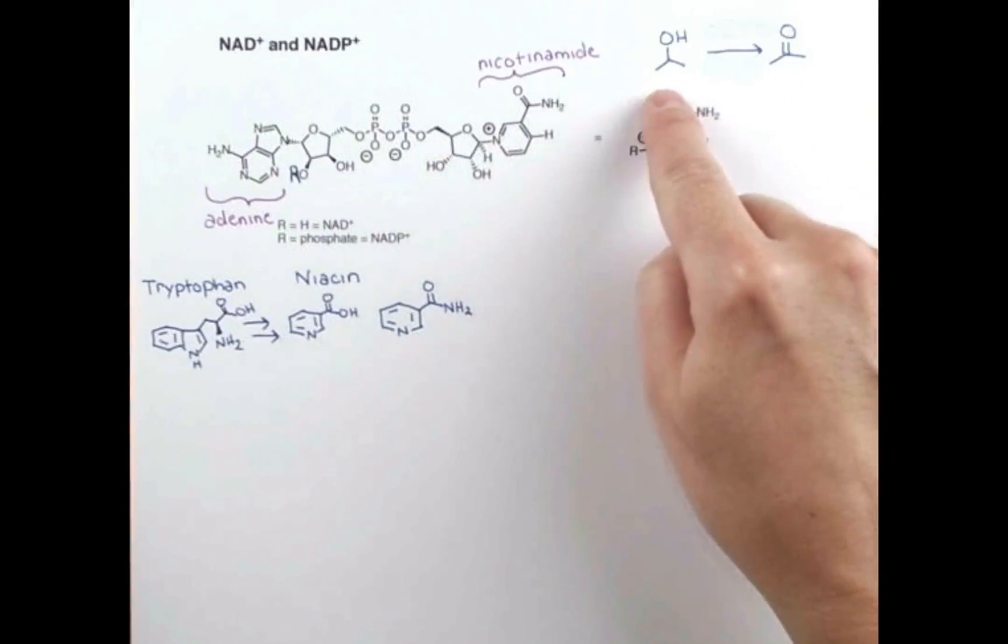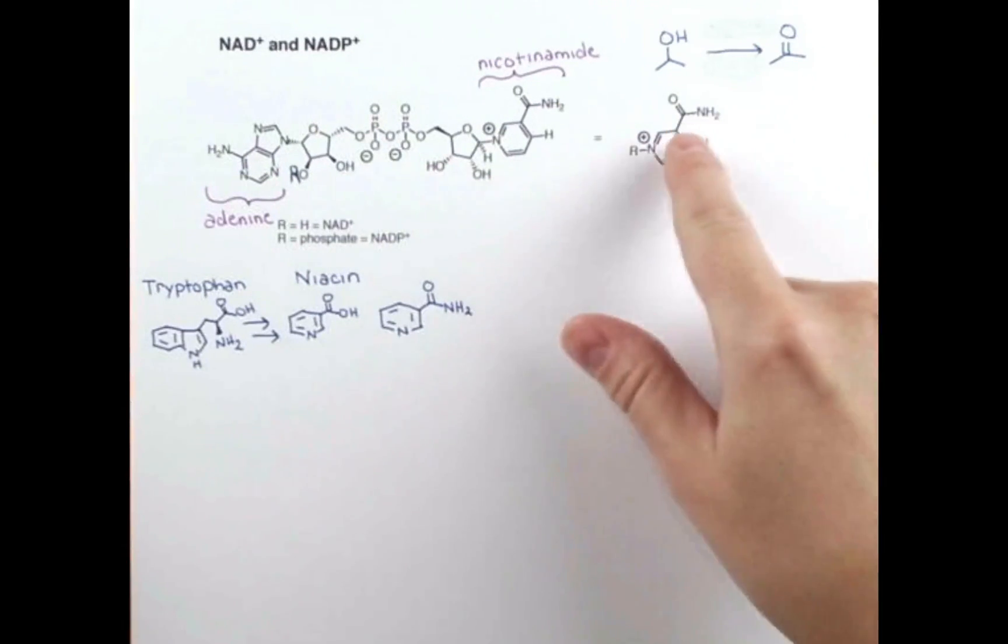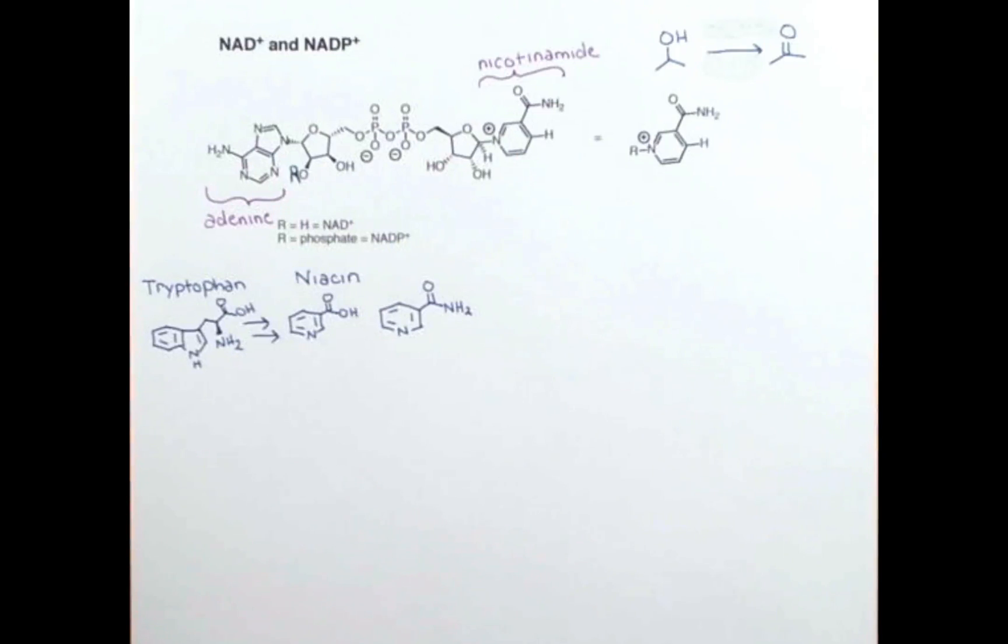NAD+ promotes the oxidation of an alcohol to a carbonyl compound. Now, if we're thinking about organic chemistry, we might do that in the lab with chromic acid or something like that, but that is not compatible with life. So this part of the molecule allows this oxidation process to occur in a biological system without harmful reagents. Let's look at how this works.